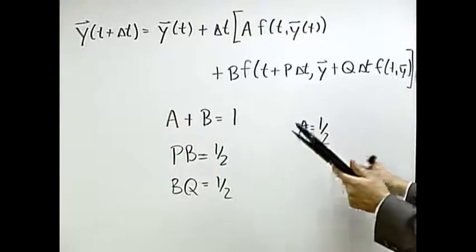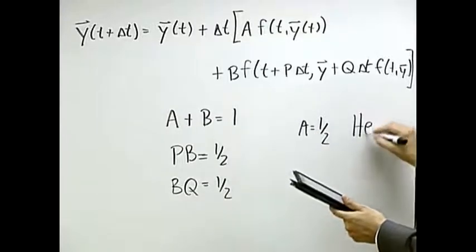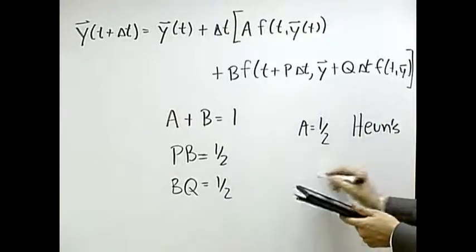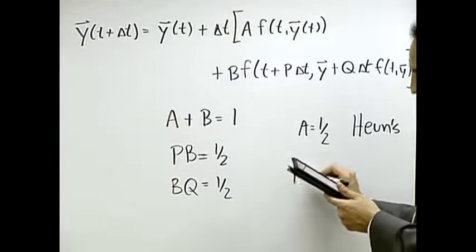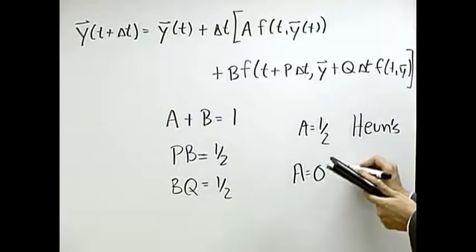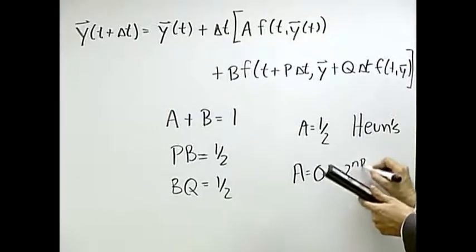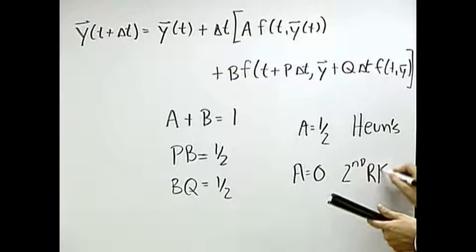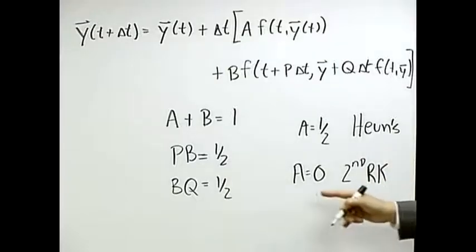...Heun's method. And if you pick A to be zero, then this is called second-order Runge-Kutta. I'll put RK. We'll talk about Runge-Kutta more in a minute.